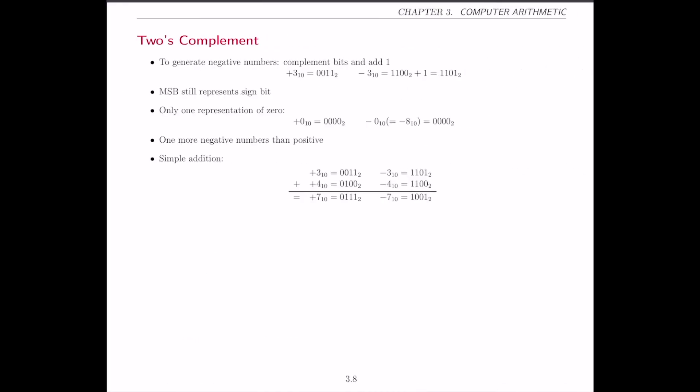These are the key properties of 2's complement, which the next slide reiterates: the most significant bit represents the sign, there is only one zero, and there is one more negative number than positive numbers. One last important property is that doing additions and subtractions is now very simple.